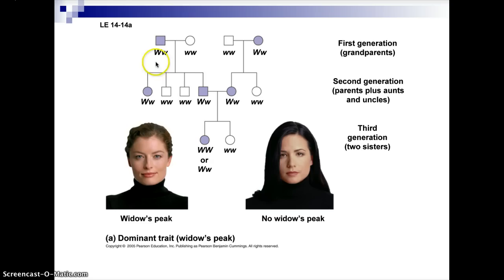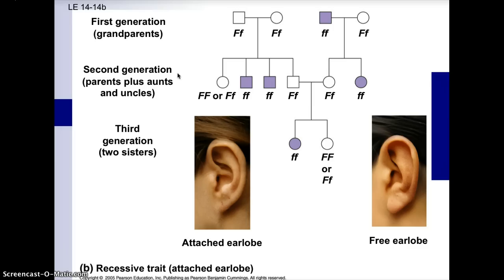Here you can see a pedigree for widow's peak — a dominant trait — versus no peak, which is recessive. Square boxes represent males and circles represent females. Widow's peak is present wherever individuals are shaded in, and absent wherever they are not shaded. Attached ear lobes is a recessive trait, so where attached ear lobes appear it would be the homozygous recessive genotype passed on from generation to generation, while free ear lobes reflect homozygous dominant or heterozygous genotype.